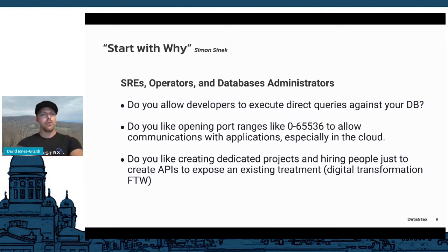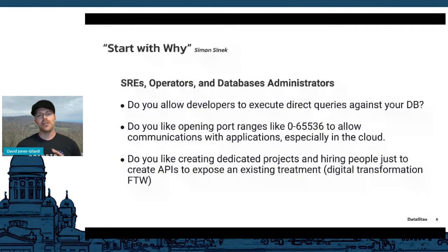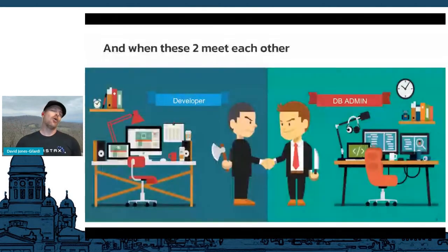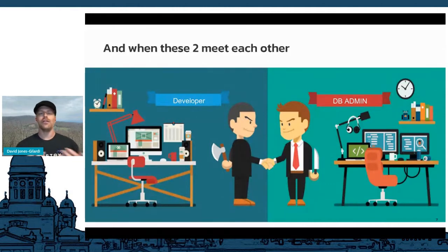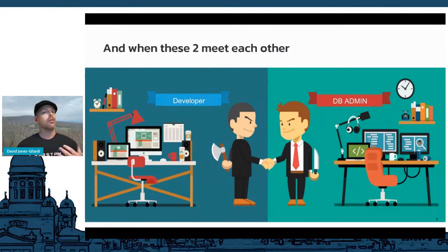With those questions from developers and administrators in mind, this is how we think about how Stargate is built. The relationship between developers and DBA admins isn't always bad — we're just coming from different perspectives. DBAs may feel developers ask too much; developers may feel DBAs are too controlling. Part of what Stargate does is help both roles and abstract out some of that capability so each gets what they want.